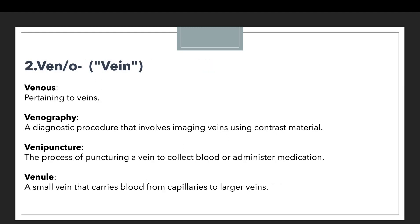Now let's move to the next prefix, which is ven or veni. Ven or veni is a prefix mainly used to showcase something related to veins. Whenever there is a discussion related to veins, we can use either prefix. For example, the first example is venous, meaning pertaining to the veins. The second example is venography, which is a diagnostic procedure that involves imaging veins using contrast material.